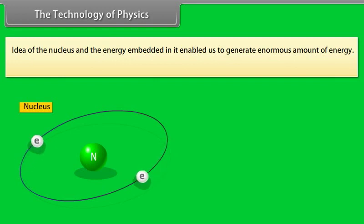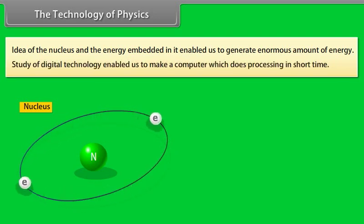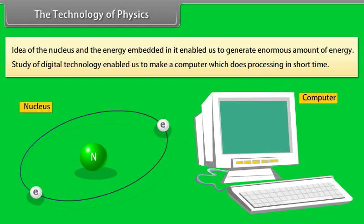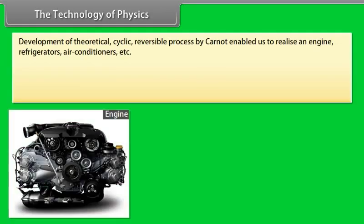The technology of physics. Idea of the nucleus and the energy embedded in it enabled us to generate enormous amount of energy. Study of digital technology enabled us to make a computer which does processing in short time. Development of theoretical cyclic reversible process by Carnot enabled us to realize an engine, refrigerators, air conditioners, etc.